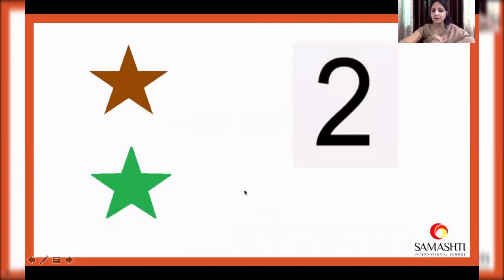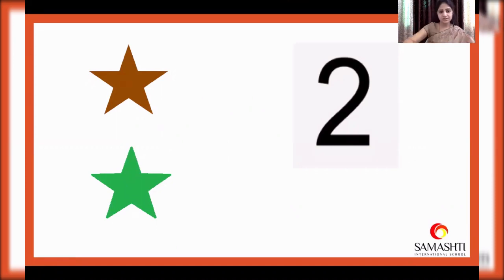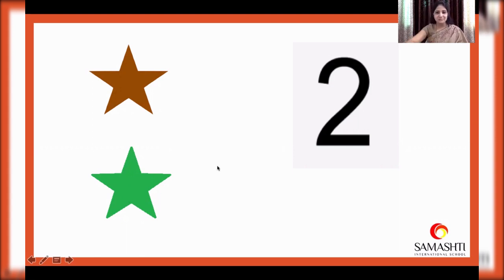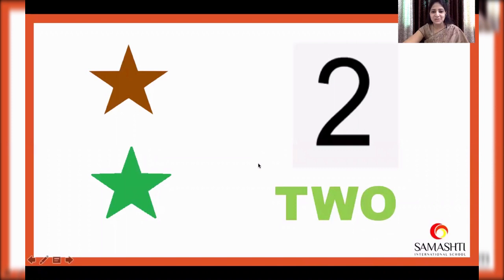Now, how many stars can you see here? Let's count. One, two. Two stars. One star is brown in color, another star is green in color. So, two stars. Two. T-W-O. 2.